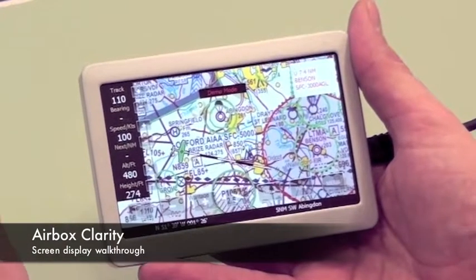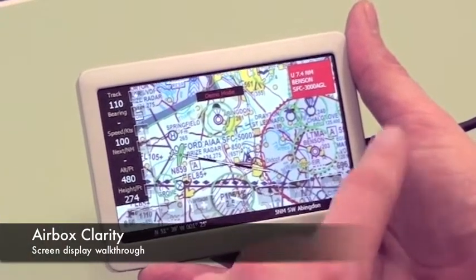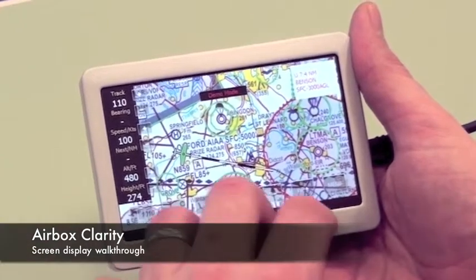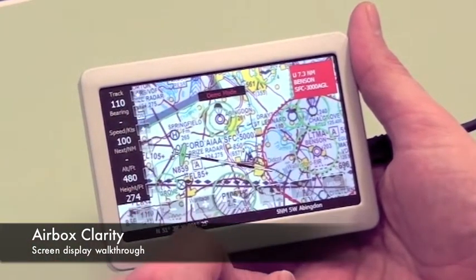Here we are in demo mode flying across the Oxfordshire countryside. I'm going to show you around the screen a little bit so you get an idea of what you can expect to see with your Clarity or Foresight.